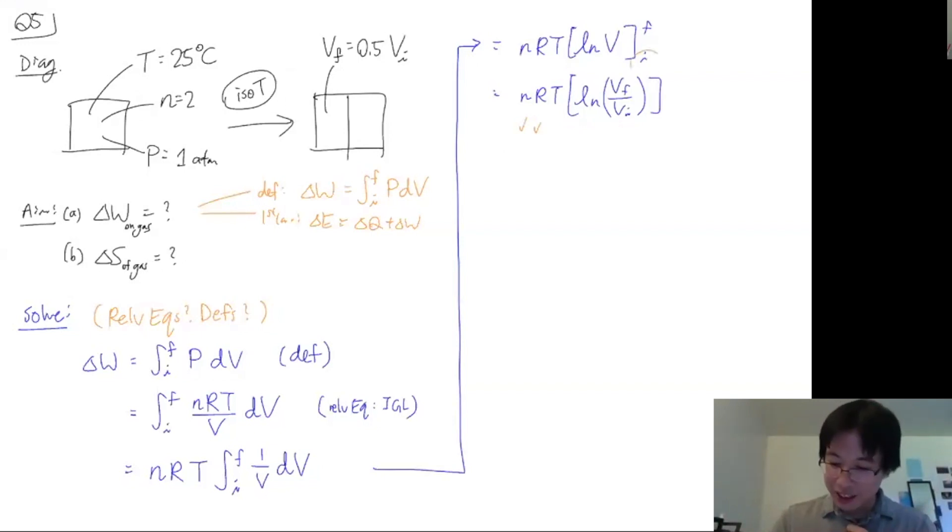Which T? Well, the T that goes from initial to final, but it's constant. It's isothermal. So there's no initial and final, that's just one T. So I do know that T. Do I know VF? Sort of. Do I know VI? I actually know VF over VI. I know the ratio is 0.5. So yes. And I'm done.